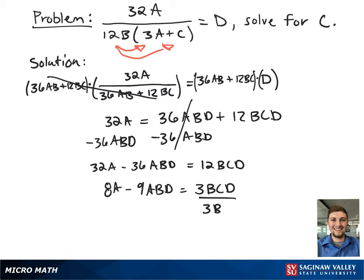Then we'll divide both sides of the formula by 3BD to get C by itself, and that will give us our final answer of C equals 8A minus 9AB over 3BD.